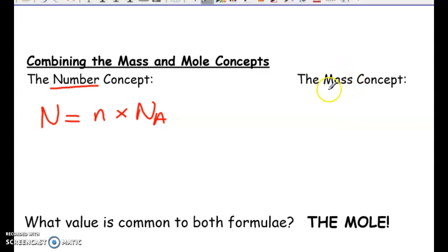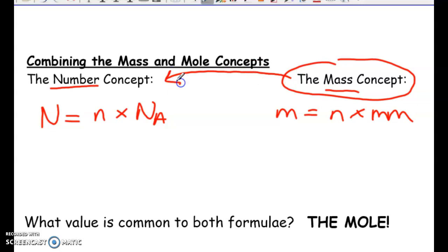If we wanted to solve for the mass of something, right, we took the mole value and we would multiply it by the molar mass. So sometimes what you're going to see is very common, actually, is you're given one thing that is in this concept, but have to transfer and solve for something in the other concept or vice versa.